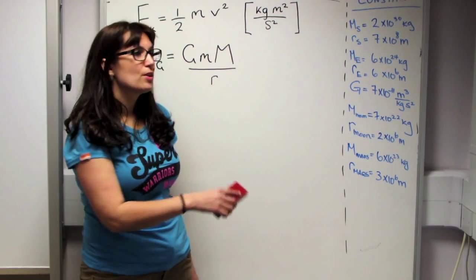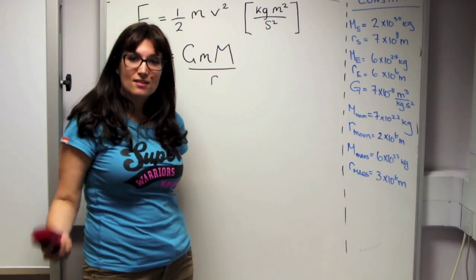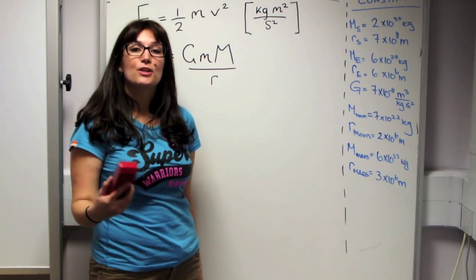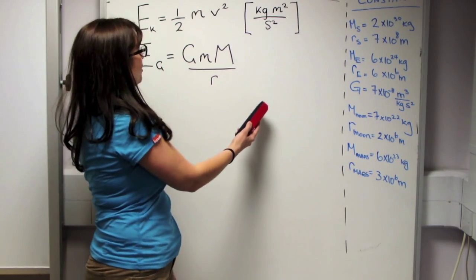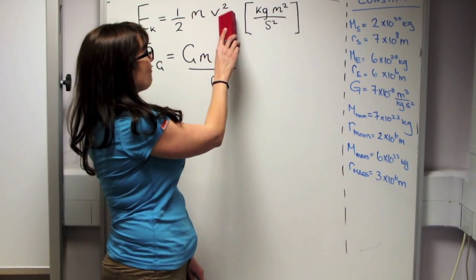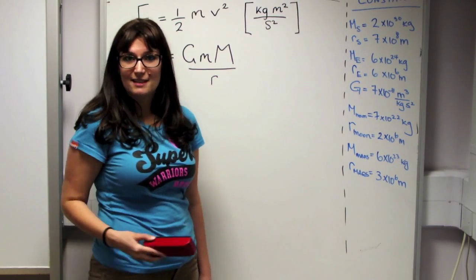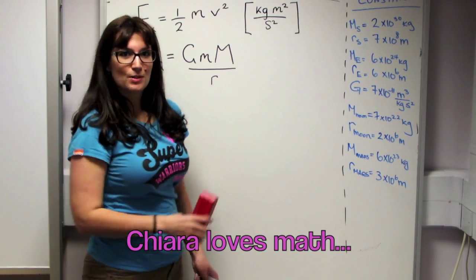Great. So now that we know the two equations that we need that are both in terms of energies, we can solve for the escape velocity. And we do that by setting these two equations equal to each other. So it basically says, how fast do I have to be going to overcome this amount of energy? What's that speed? So let's do some math.